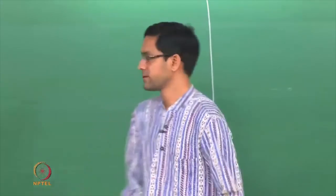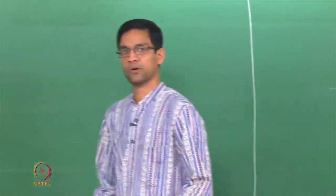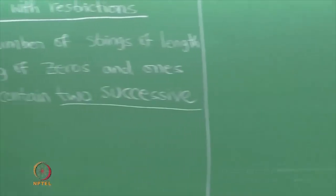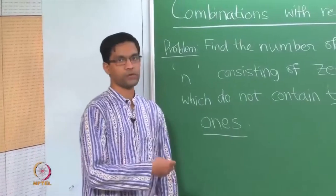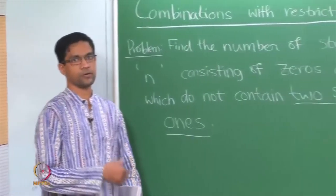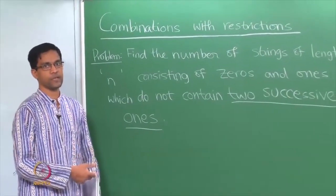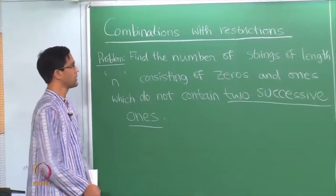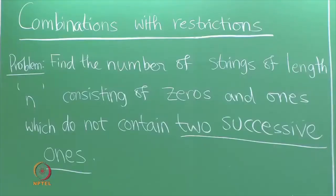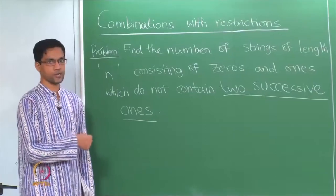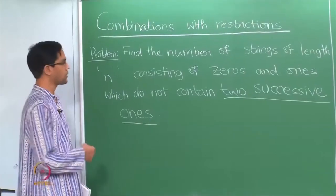Welcome back. Today we will talk about combinations with restrictions. So far we have talked about trying to enumerate the number of combinations of various kinds. This one is slightly different in that it imposes a certain restriction on the allowed combinations.